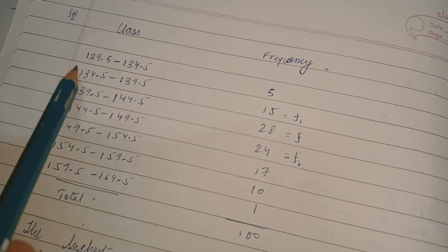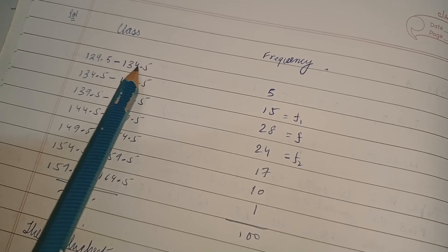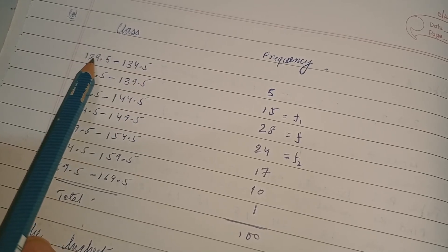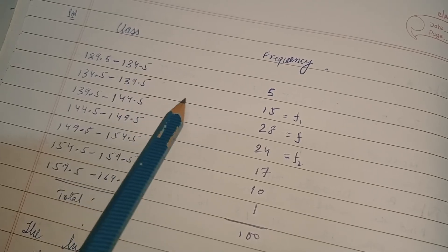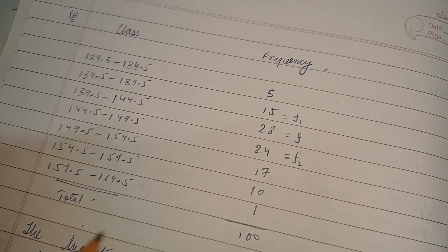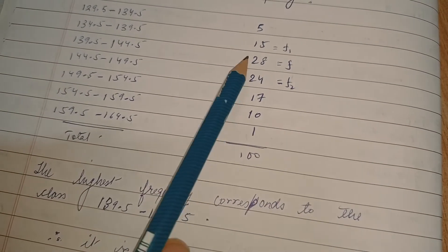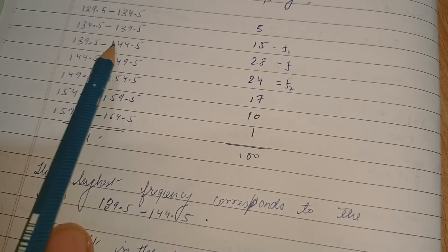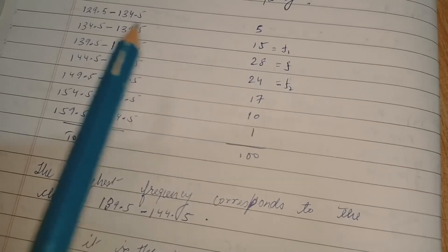Now I have subtracted 0.5 and added 0.5 in all the classes, in lower and upper values. I have subtracted 0.5 from the lower bounds and added 0.5 in the upper bounds of all the classes. These are the frequencies, so total frequency is 100. The highest frequency corresponds to what? 28, right? So 28 corresponds to this class, 139.5 to 144.5. So this is the model class.